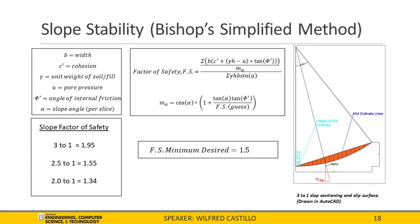Slope stability refers to the stability of earthen materials on a slope and determining whether it will fail. We used the simplified Bishop's method to determine the factor of safety for possible slopes. The method consists of drawing the slope — in this case the 3-to-1 slope — and its slip surface, created by sweeping a line within a radius. The sections are inserted into the cohesion formula. The factors of safety for each slope are: 1.95 for 3-to-1, 1.55 for 2.5-to-1, and 1.34 for 2-to-1. The slopes of 3-to-1 and 2.5-to-1 are preferred as they meet the minimum desired factor of safety of 1.5.